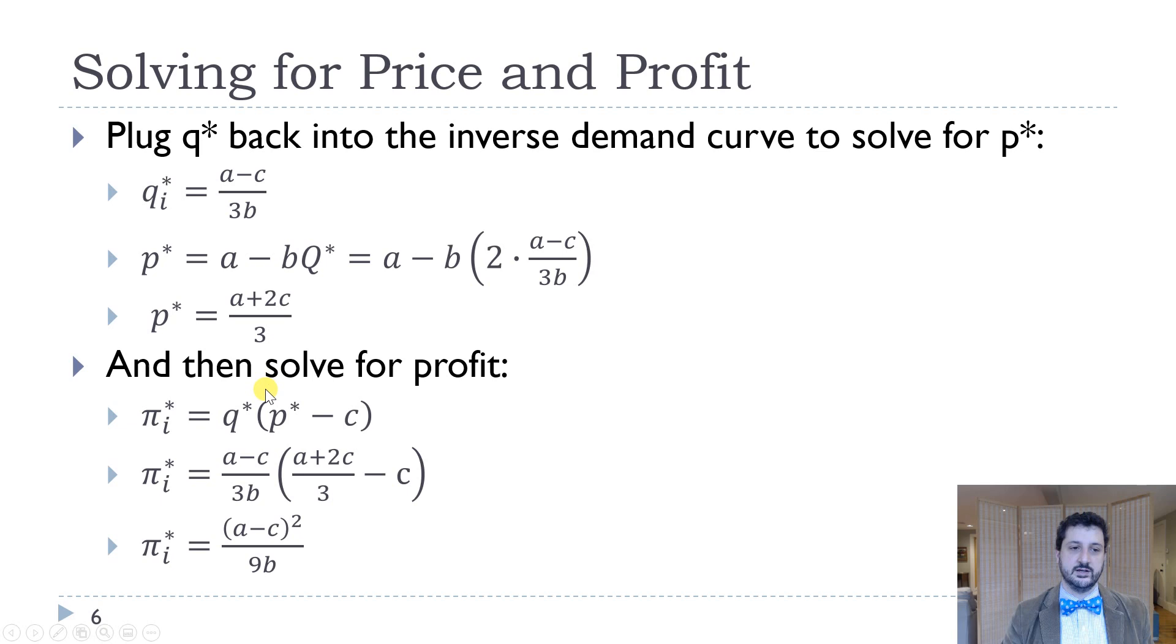We can then solve for profit. So profit is just quantity times price minus cost. That becomes A plus 2C over 3 minus C. So that's two thirds C minus C. So that becomes a minus C over 3. So we get, it all works out nicely. A minus C times A minus C. So that's A minus C squared in the numerator. And then 3B times 3. And the denominator becomes 9B. And so remember, that's individual firm profit, not total profit. We'd have to multiply by two to get total industry profit in this duopoly.